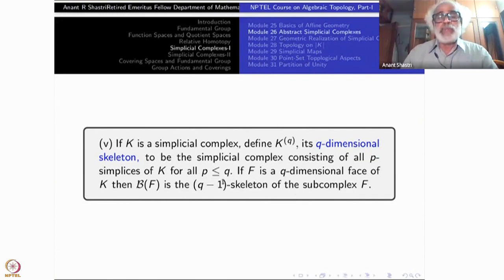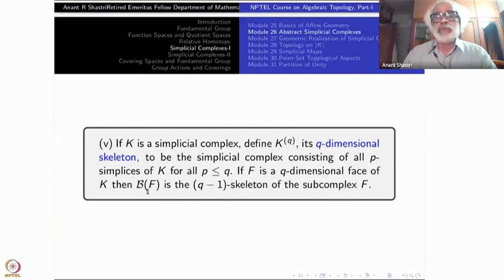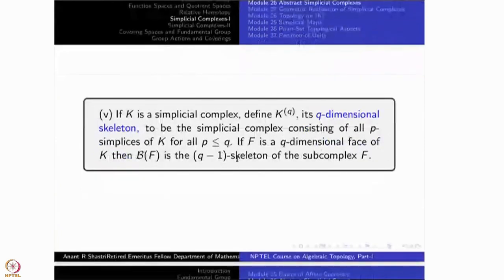For example, when you take F as a simplex, its (Q-1)-dimensional skeleton is the previous example — the boundary of F. Only F itself will be omitted; all its proper subsets will be there, because F is the only Q-simplex and that will be omitted since I am taking only dimension Q-1. So, this example generalizes the previous example.